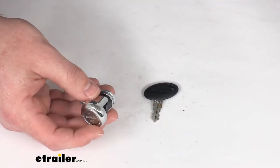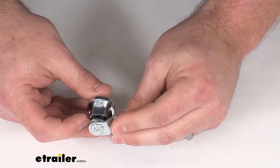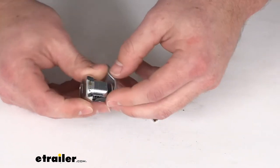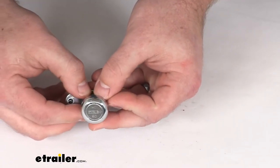So the cutout that you'll need to get this installed is going to need to be about five-eighths of an inch in diameter so that you can get this wiggled on through and put into place.